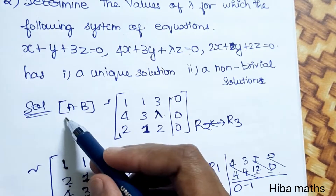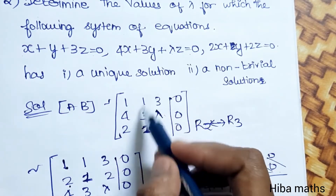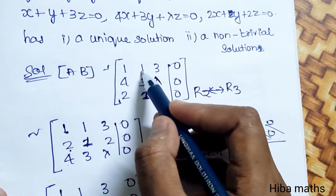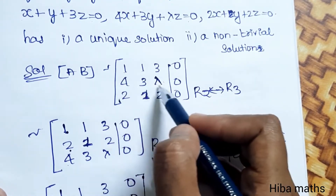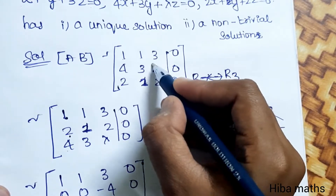In the augmented matrix form, I have given the equations: row 1 is 1, 1, 3; row 2 is 4, 3, lambda; row 3 is 2, 1, 2; and the right-hand side is all 0.